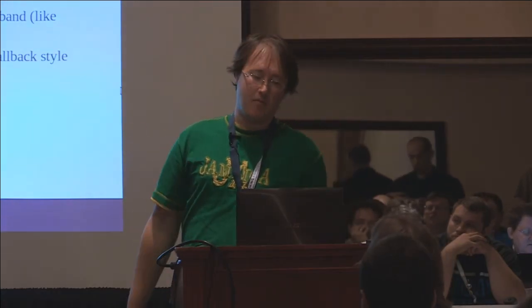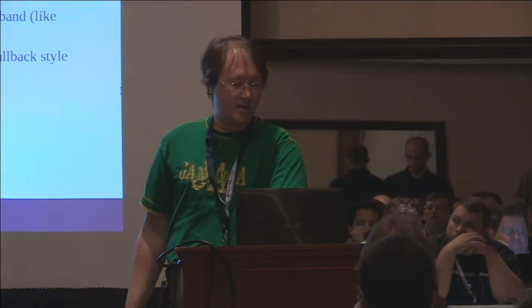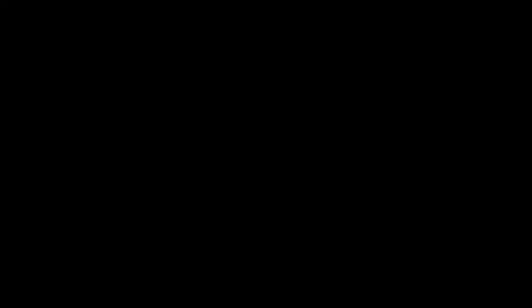I actually really like callback style — a lot of people want to abstract it away, but Callback::Frame is an unobtrusive way of doing callback style. Here's a classic example of why exceptions are complicated in an asynchronous program. I'm creating a timer that's going to trigger in 100 milliseconds and then call a callback that throws an error. That eval is obviously intended to catch that error, but it won't work — a timer just installs something in the event loop and immediately returns. So the handler won't get called; 100 milliseconds later the exception gets thrown in the event loop with no way to tie it back to the error handler you wanted.